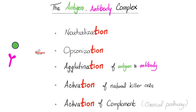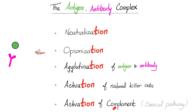Who secretes antibodies? Plasma cells. Where did they come from? From B lymphocytes. What happens when your antibody meets the foreign antigen? Neutralization of the bad antigen, opsonization — making it tasty — agglutination, activation of the natural killer cell to kill those bacteria, and activation of the complement system. The antigen-antibody complex activates the classical pathway of the complement.